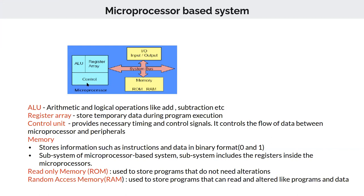The control unit manages when and how data is transferred — from one register to another, from a register to I/O, or from a register to memory. Various control signals achieve this. Data transfers between components happen through communication lines called the system bus. Just as a bus carries passengers from one place to another, the system bus carries information from one place to another. The ALU performs arithmetic and logic operations like addition and subtraction, and also handles decision making.